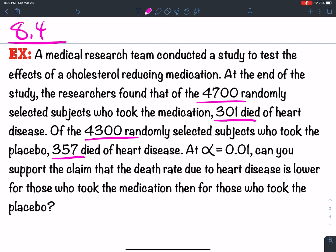So at alpha equals 0.01, can you support the claim that the death rate due to heart disease is lower for those that took the medication?